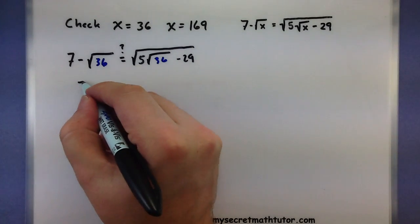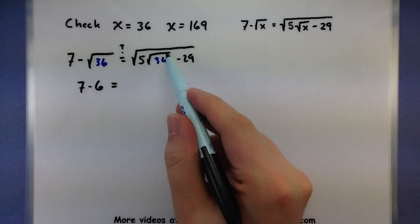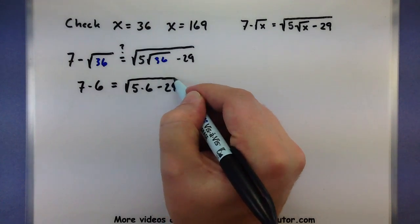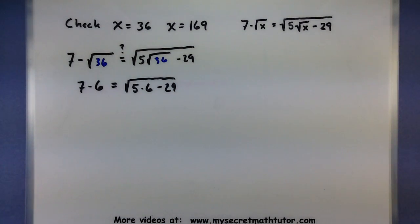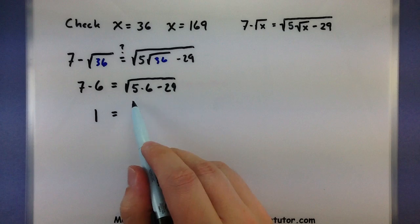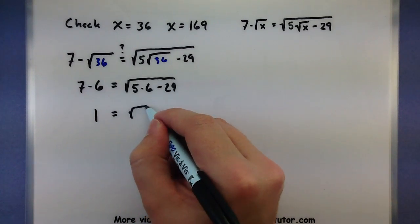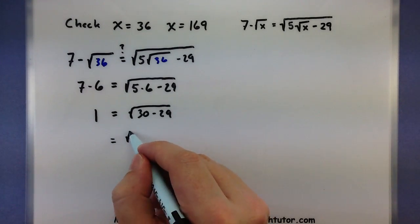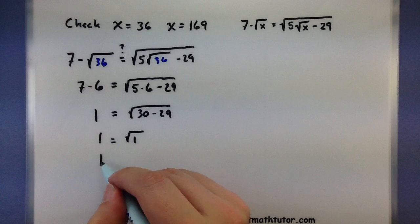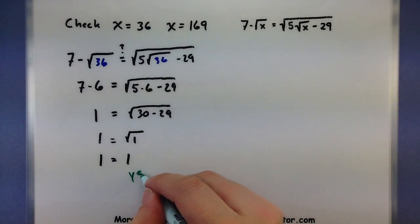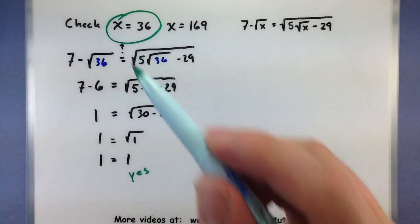So, we need to check 36 and we need to check 169. Let's start off with this 36. So, 7 minus the square root. We'll put our first little 36 right in there. Then we're checking. Is it equal to the square root? 5 times the square root. Let's put in the 36 here. Minus 29. So, the square root of 36 is 6. That's a nice one. And the square root of the other 36 is also 6. So, this one, even though the numbers are big, doesn't look like it's that bad to plug in. 7 minus 6 is 1. 5 times 6 is a 30. So, over here on the left side, I have 30 minus 29 or the square root of 1. So, I'm looking at 1 equals 1. And, of course, that is definitely a true statement.